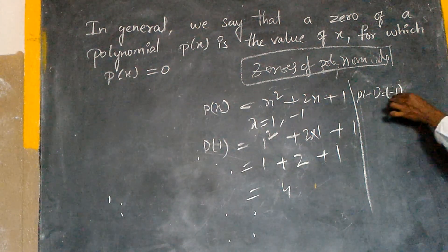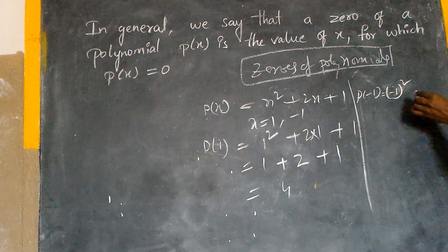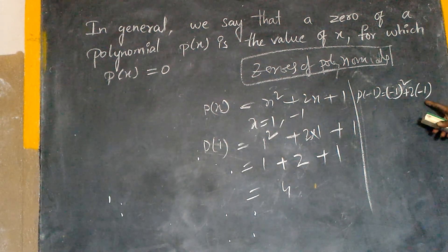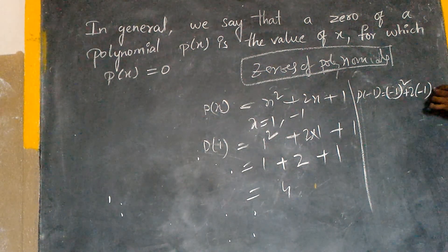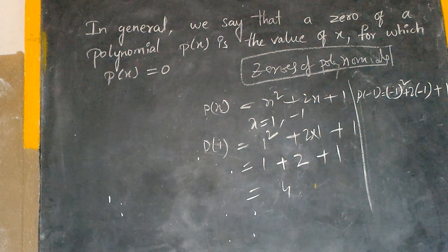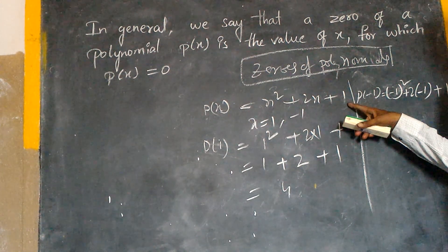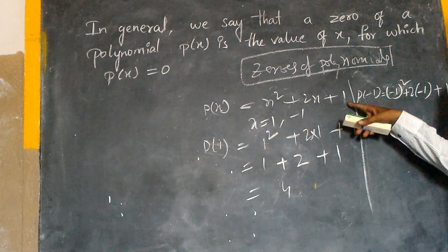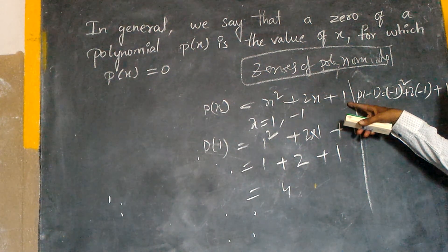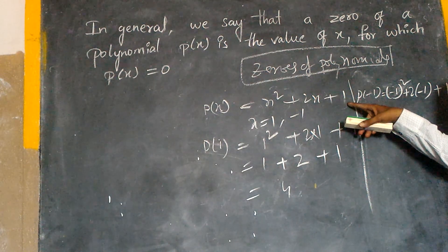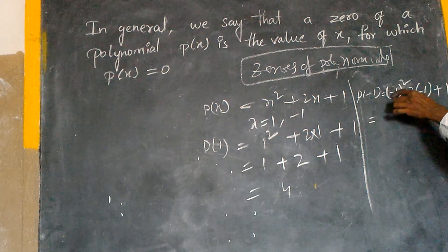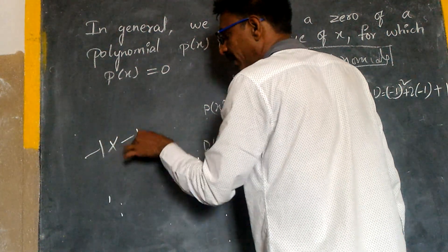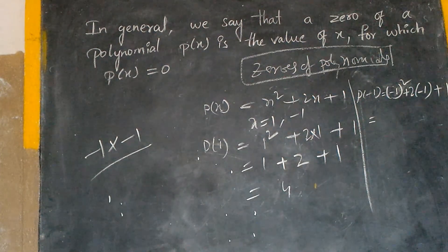Just look at the board: minus 1 whole square, plus 2 into minus 1, plus 1. In place of x, we have to write minus 1. So, minus 1 whole square — minus 1 into minus 1.